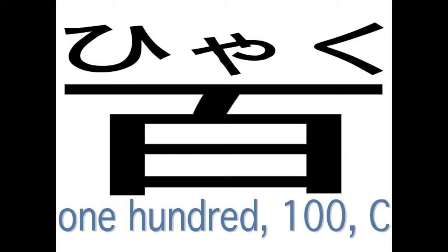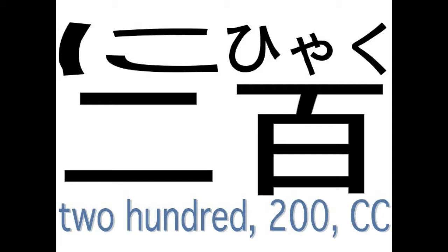So how do you think we say two hundred? It's the same idea. Put two in front of hundred to get nihyaku, which is two hundred. As with everything else, it's basically the same thing — you just say the number in front of hundred to say it properly.